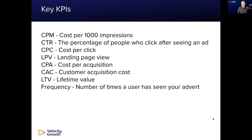The first key KPIs within the Facebook ecosystem: CPM is the cost per 1,000 impressions — how much it's costing you to get in front of 1,000 people. CTR is click-through rate — the percentage of people who click after seeing your ad, so for every 1,000 people who saw it, what percentage are clicking? CPC is your cost per click — how much does each of those clicks cost you?